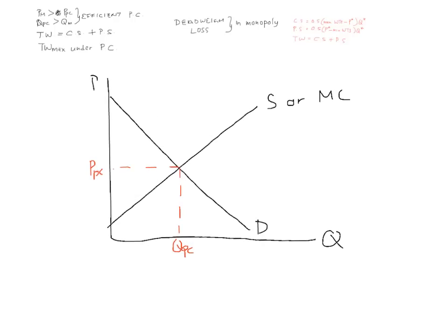The maximum willingness to pay is this point up here, and the minimum willingness to sell as a producer is this lower point — you will not sell for anything less than that. So consumer surplus will simply be this upper triangle, and producer surplus will be this lower triangle.